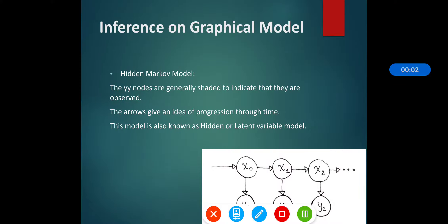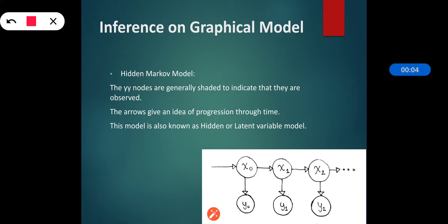In this section we will see inference on the graphical model. We are considering the problem of computing — or estimating — the marginal of the probability density which factorizes according to the graphical model. We are given the node potentials and edge potentials, and we don't know the distribution function they are proportional to, so we are trying to compute or estimate the marginal probability density.